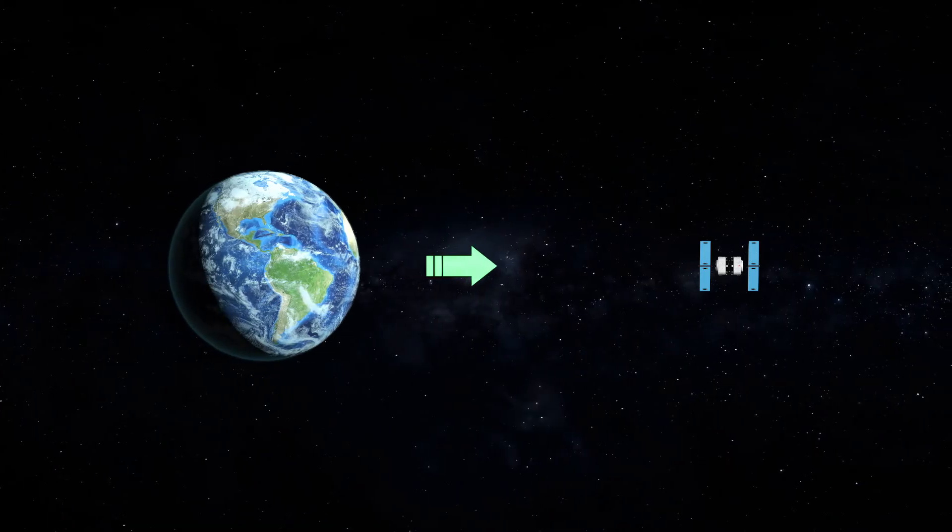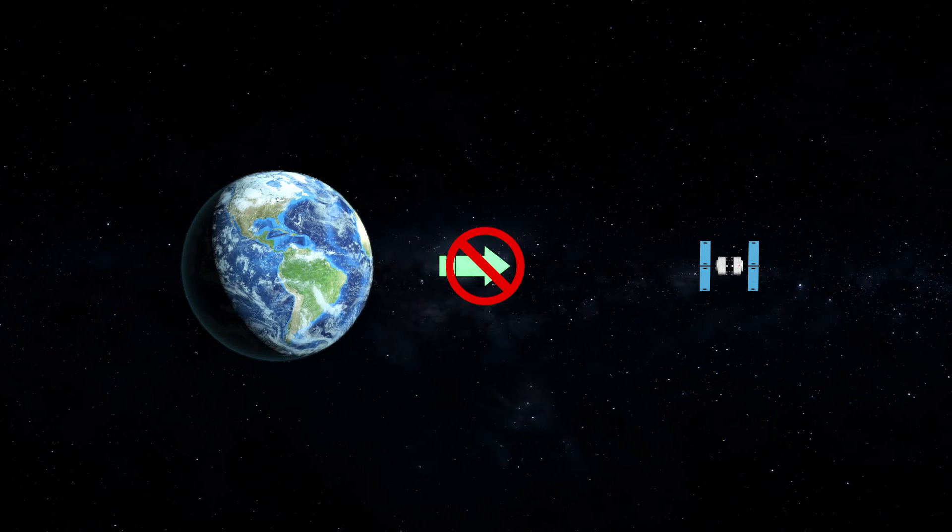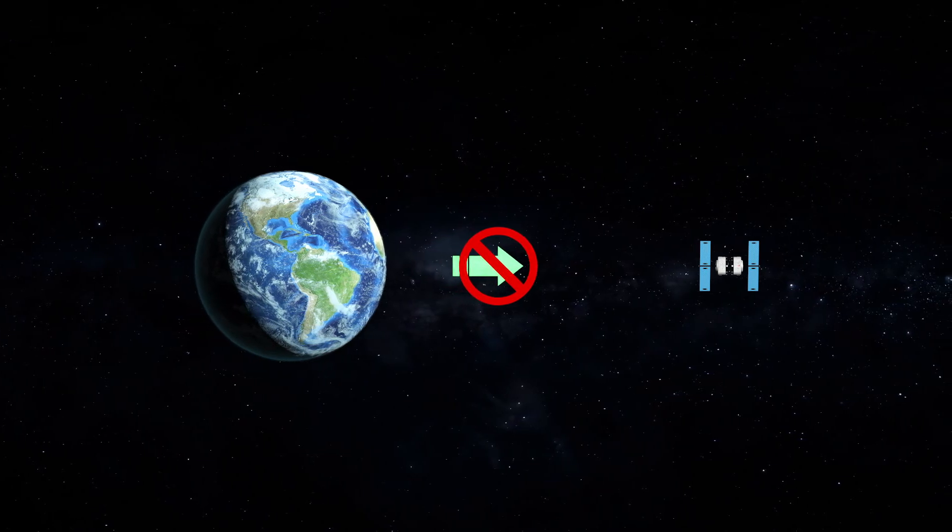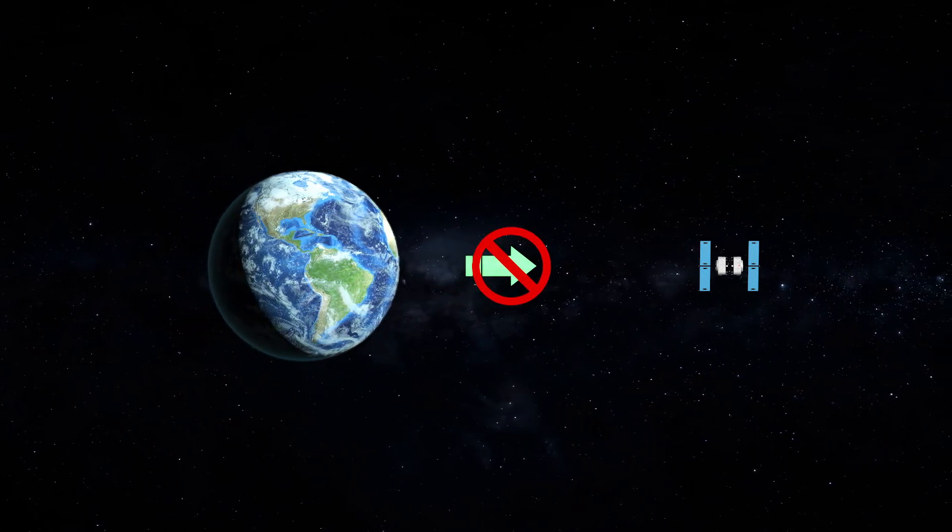The second assumption is that the satellite does not pull the Earth. We made the same assumption in the Newton educational aid. Since the mass of the Earth is so much greater than the mass of the satellite, that the satellite's pull does not move the center of the Earth, it could be ignored. This is a valid assumption.